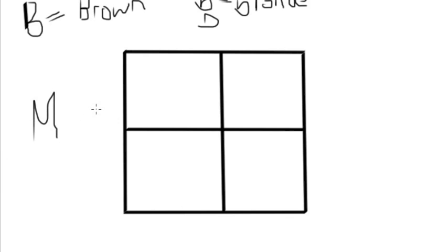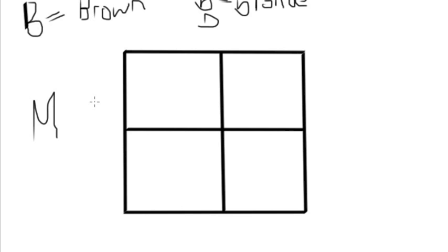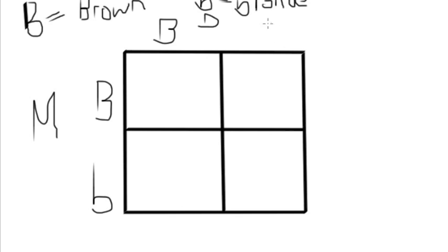So this is mom. Mom is heterozygous, which means she has one of each — she's got a big B and a little B. Dad also has a big B and a little B because this is heterozygous again.